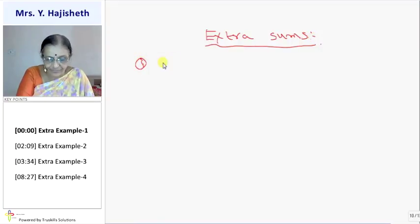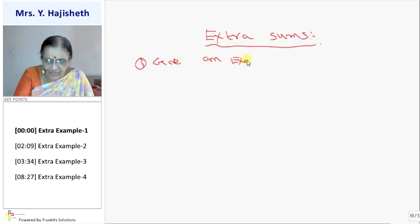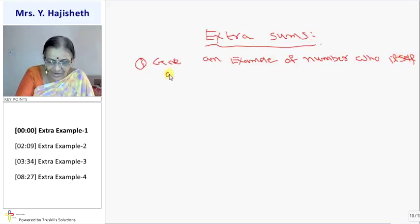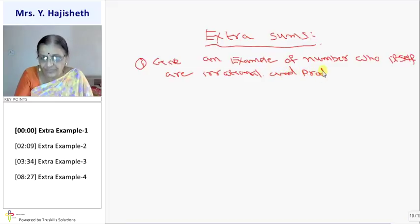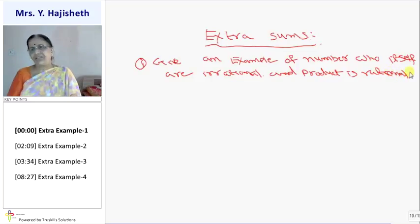First sum is, give an example of two numbers which are irrational but the product is rational.